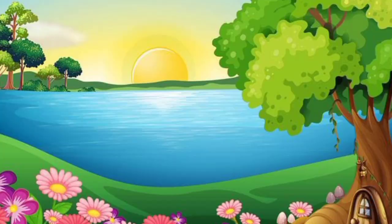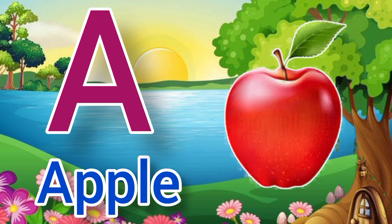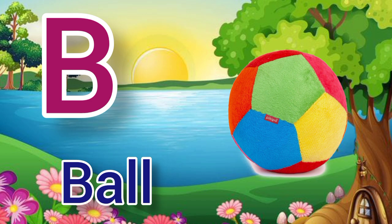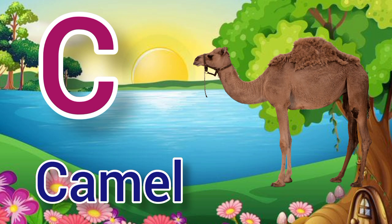A. A for apple, apple means shaap. B. B for ball, ball means gend. C. C for camel, camel means oot.